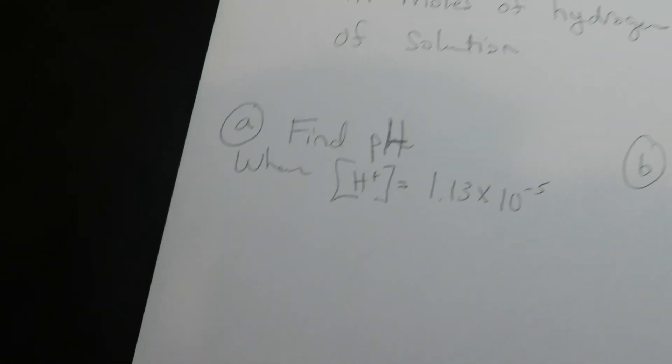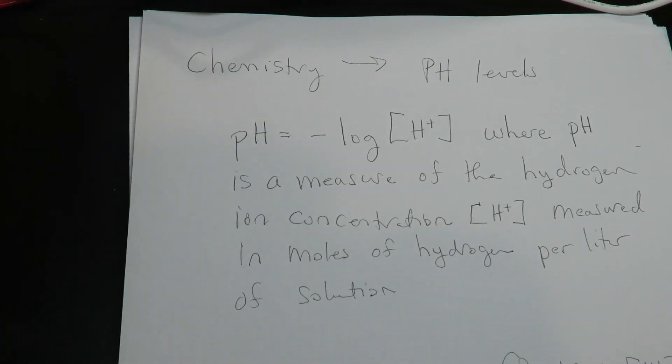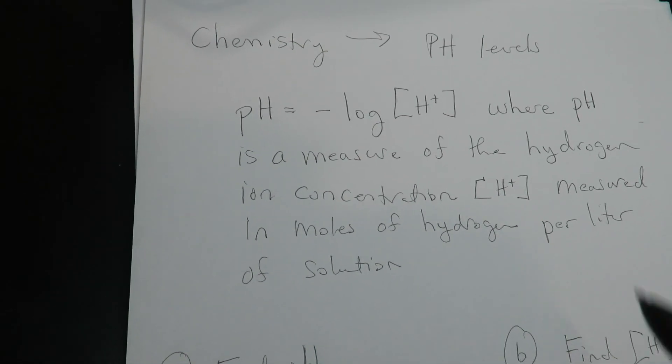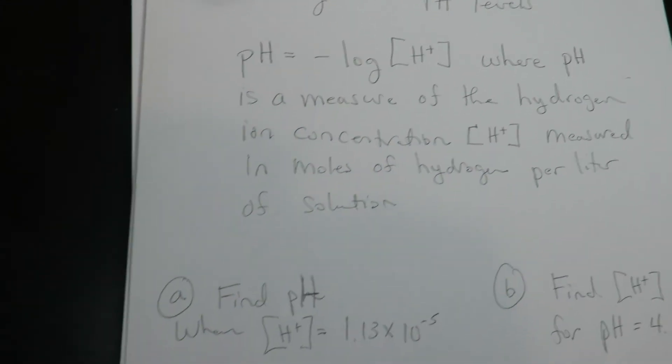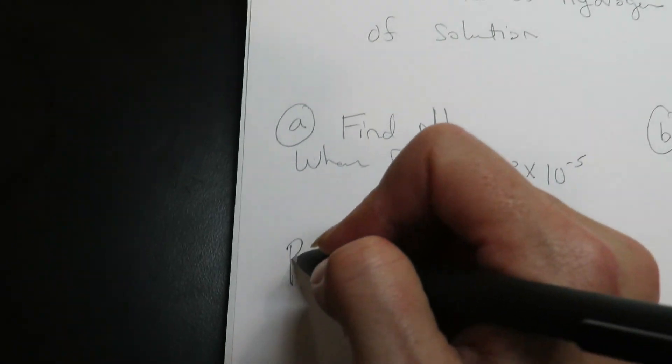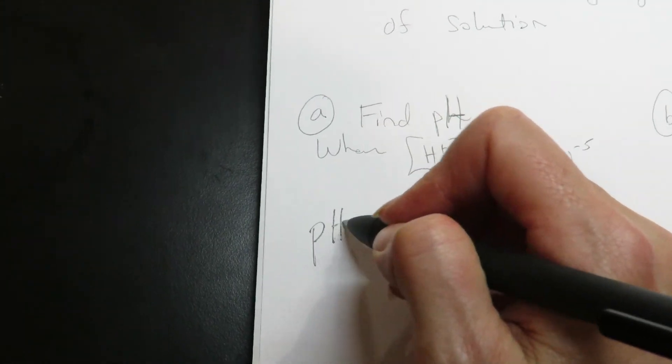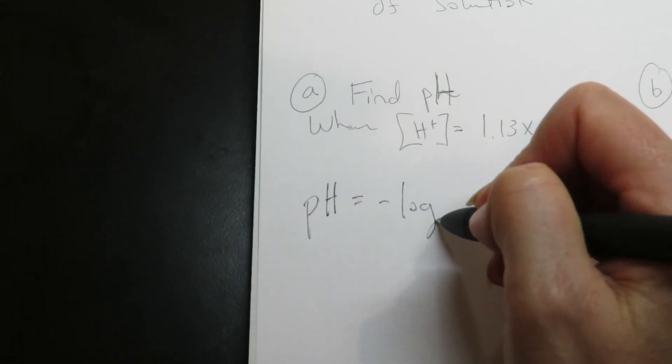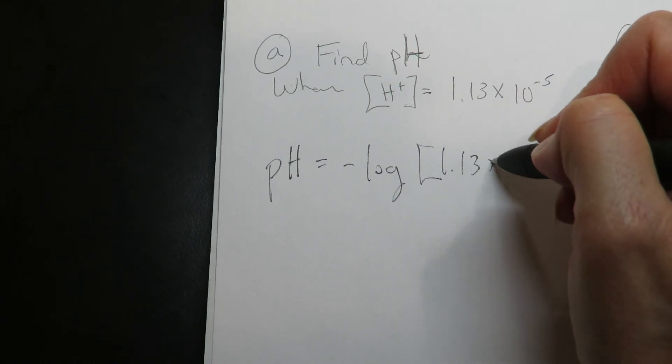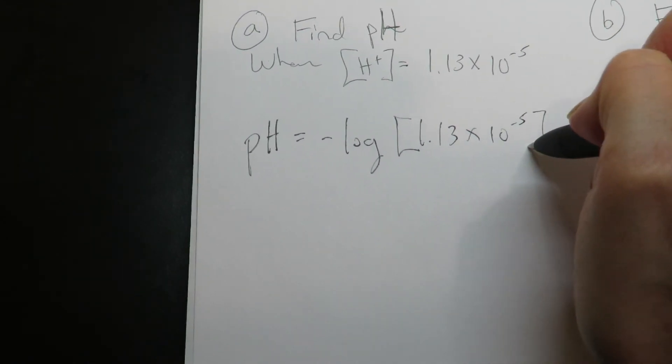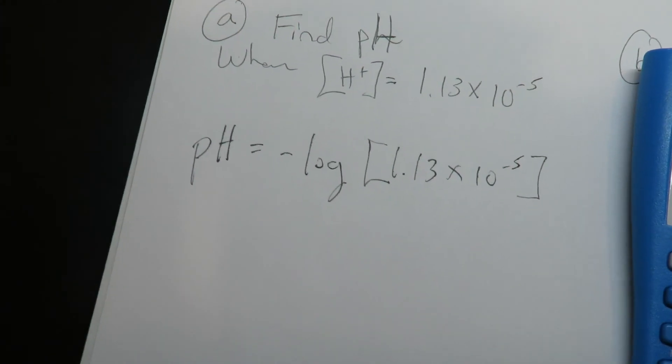And then let's do chemistry. So this is how you calculate the pH given the hydrogen ion concentration. So let's start with this one over here. They're giving you a hydrogen ion concentration of 1.13 times 10 to the negative 5.